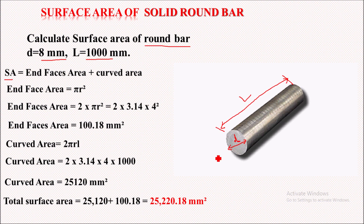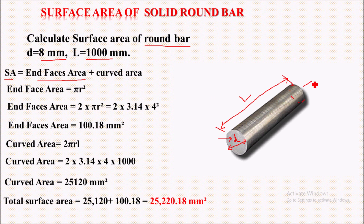The surface area of this solid round bar is the end faces area plus the curved area. The end faces are circular in shape — this is the top circle and this is the bottom circle of the solid round bar.